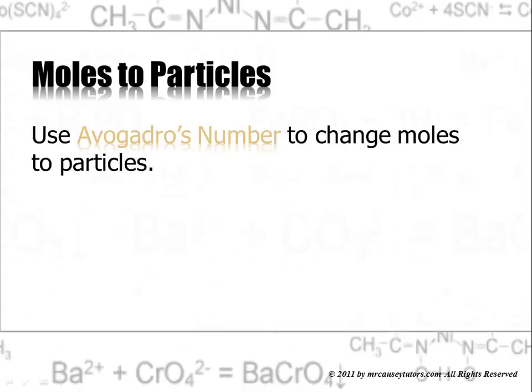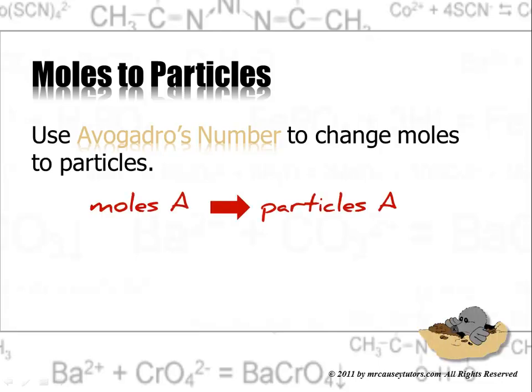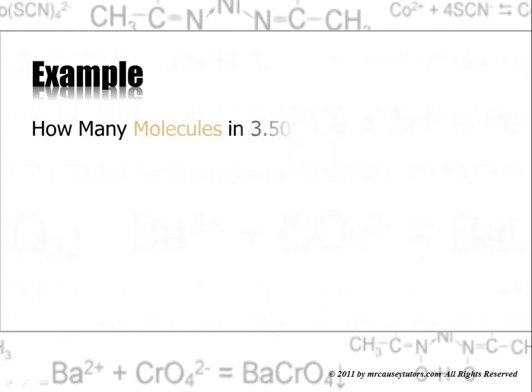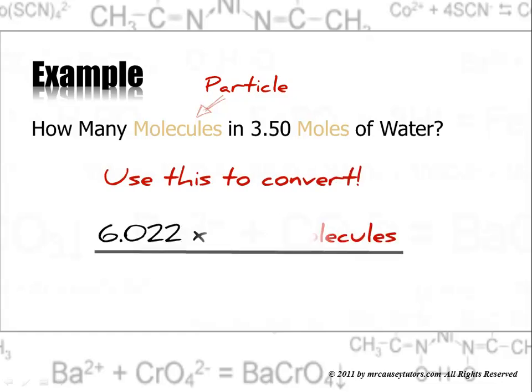Moles to particles. Use Avogadro's number to change moles to particles. Moles of A to particles of A. This is so cool. Example: how many molecules in 3.50 moles of water? Molecules are our particle. Use this to convert: 6.022 times 10 to the 23 molecules per one mole.